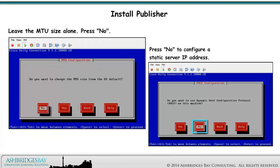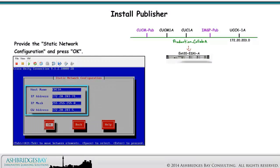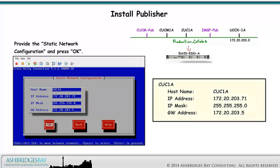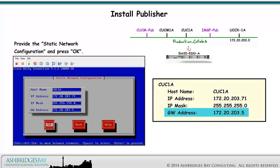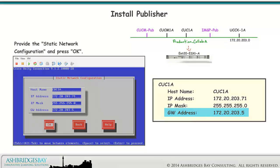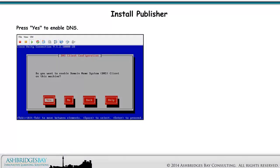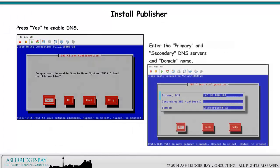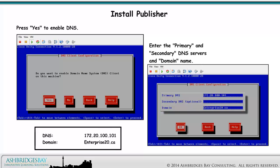Press No to leave the MTU size alone, and press No again so that you can configure a static server IP address. Provide the static network configuration and press OK. For Enterprise 20, CUC1A has IP address 172.20.203.71 with a mask of 255.255.255.0 and a default gateway of 172.20.203.5. Press Yes to enable DNS. Enter the primary and secondary DNS servers and domain name. For Enterprise 20, we have only one DNS server at 172.20.100.101 with the domain enterprise20.ca.